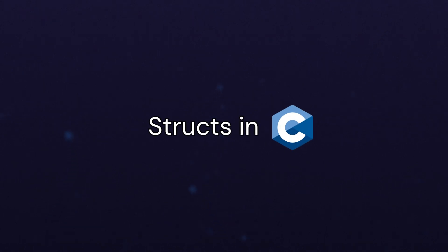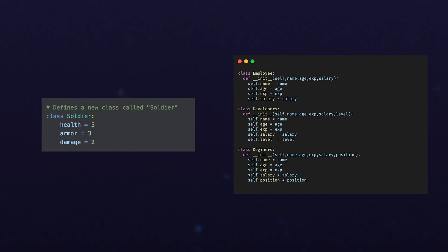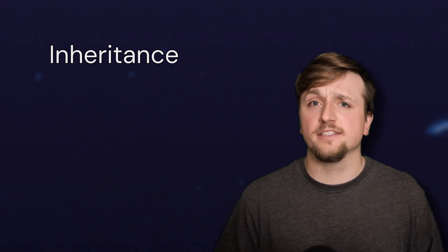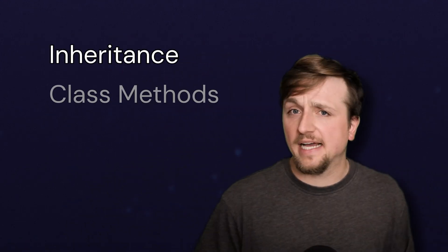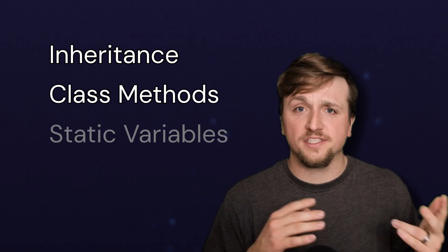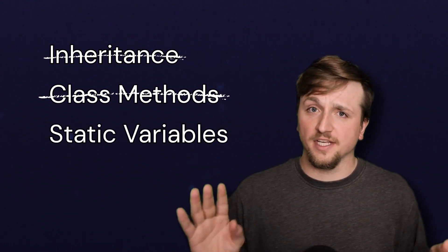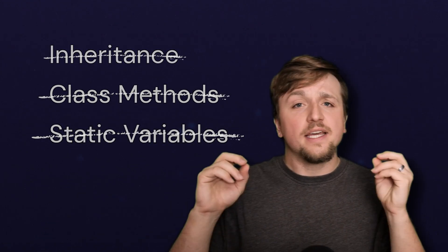Structs in C are similar to classes or objects in Python or JavaScript, but they are a bit simpler. There aren't any concepts of things like inheritance or class methods or static variables, nothing like that.